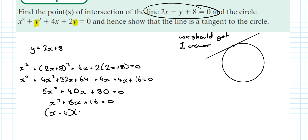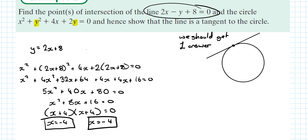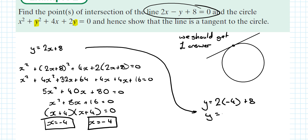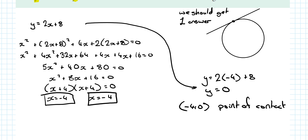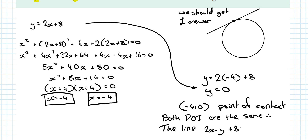Factorising: (x + 4)(x + 4) = 0, so x = −4 and x = −4. There's only one answer for x. Using y = 2(−4) + 8 = 0, so the point of contact is (−4, 0). Both points of intersection are the same, therefore the line 2x − y + 8 = 0 is a tangent to the circle.